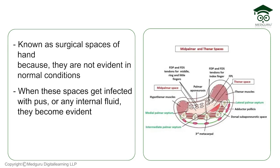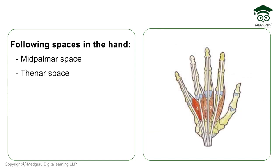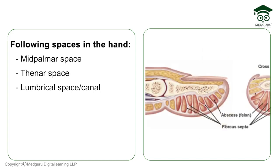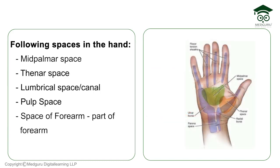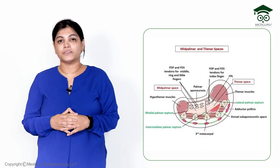These are called surgical spaces of the hand. The spaces lying in the hand include: mid palmar space, thenar space, lumbrical space (also called lumbrical canals), pulp space, and space of forearm. The space of forearm is an intermuscular space lying in the distal aspect of the forearm. These are the important surgical spaces of the hand.